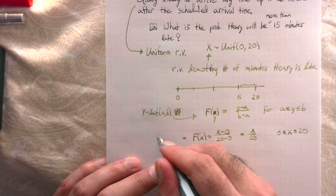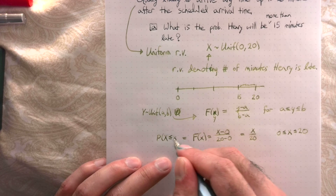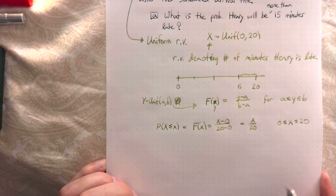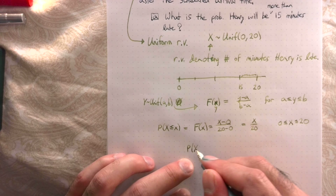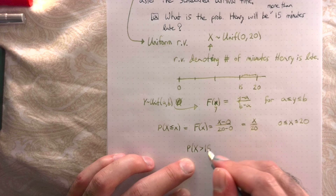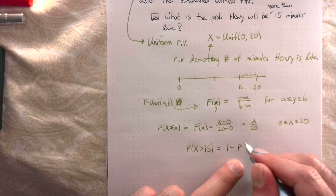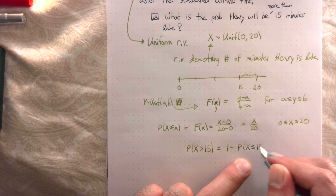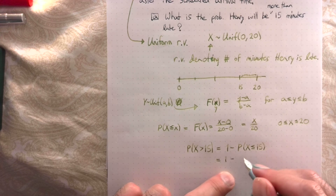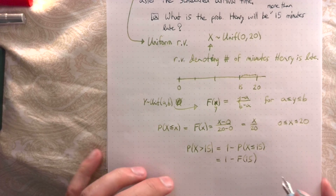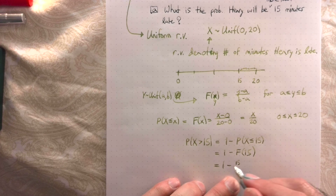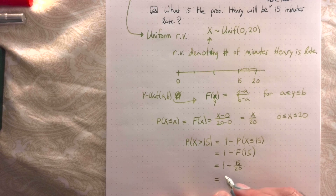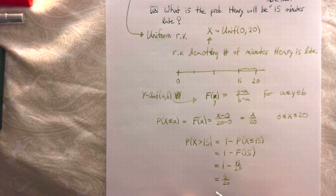F(x) is the probability that X ≤ x. We want P(X > 15), which equals 1 − P(X ≤ 15) = 1 − F(15) = 1 − (15/20) = 5/20 = 1/4.